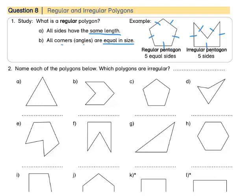However, this shape looks a little bit funny. All of these sides are not the same length. Also, all of these angles are not the same size. Therefore, this is a pentagon, but it is an irregular pentagon. This is what our regular pentagon looks like, and this is an example of an irregular pentagon. Both of these are pentagons because they have 5 sides.